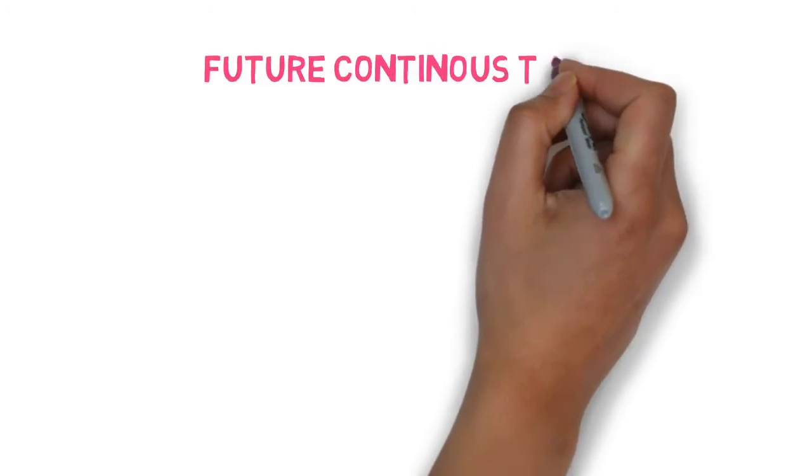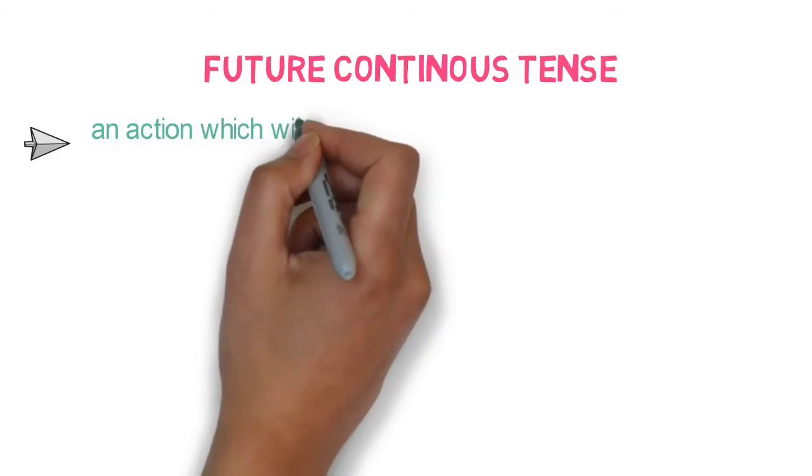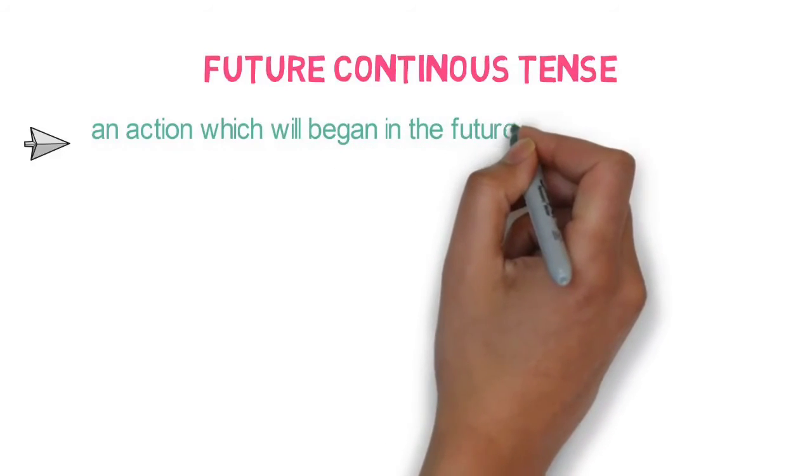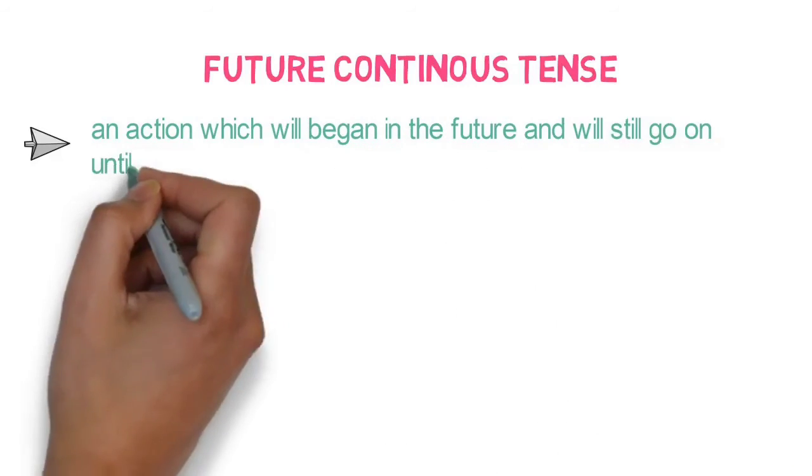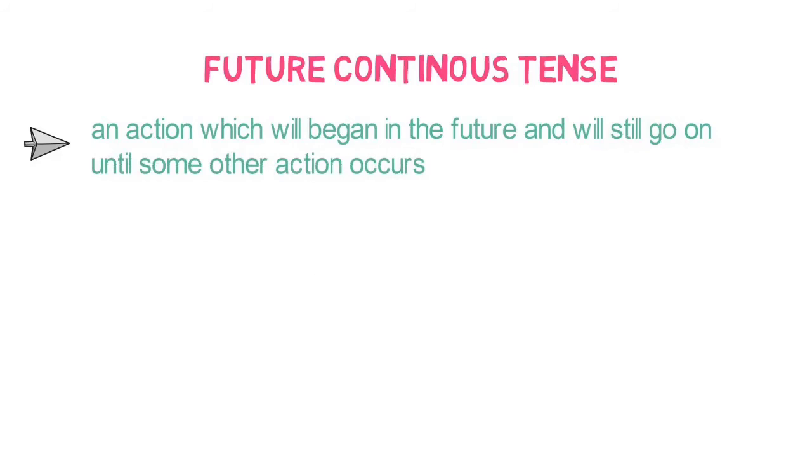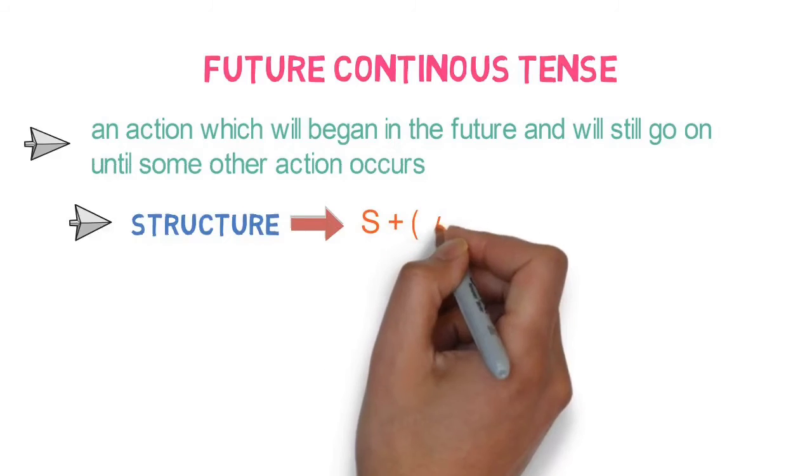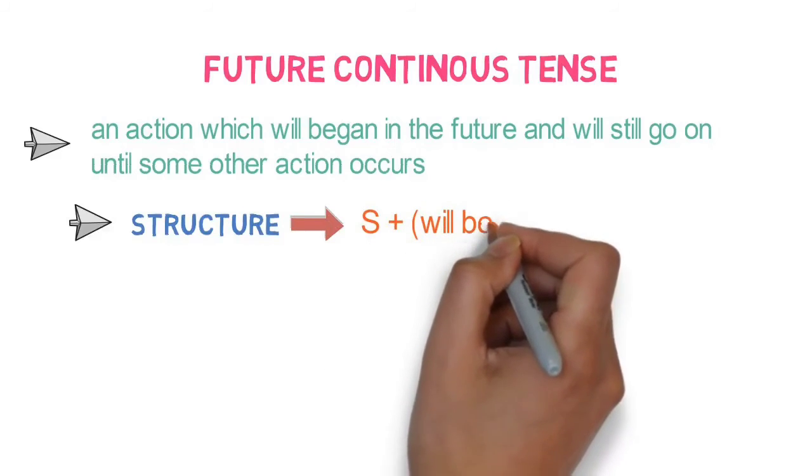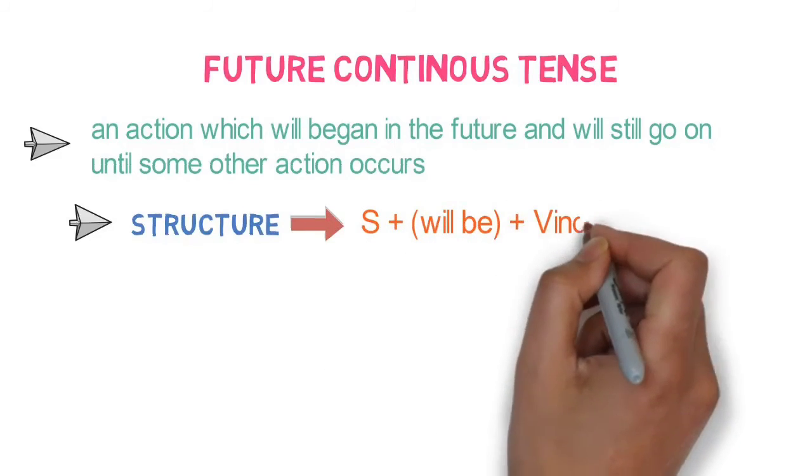Future continuous tense. It refers to an action which will begin in the future and will still go on until another action occurs. Structure of the sentence will be subject plus will be plus verb ing form plus object.